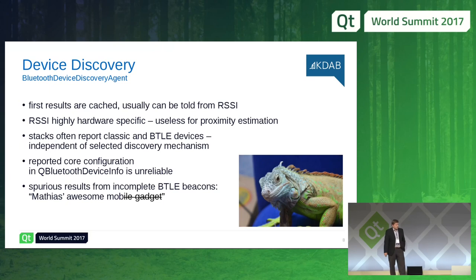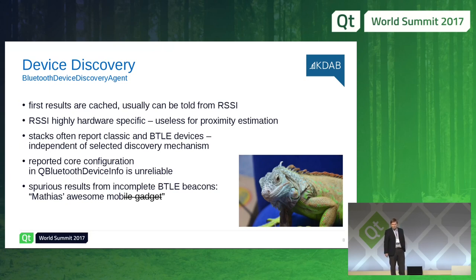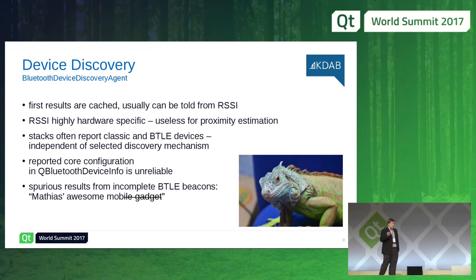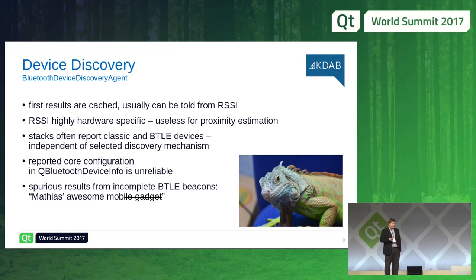Another problem during device discovery is that most Android Bluetooth implementations don't care that you asked for only low-energy devices — they'll happily report all classic-only devices nearby too. And even worse, there's a nice configuration class in Qt, the CoreConfiguration field in QBluetoothDeviceInfo, but the field is simply wrong — not because Qt is bad, but because we're getting wrong information from the underlying stack. So you can't filter by that either.